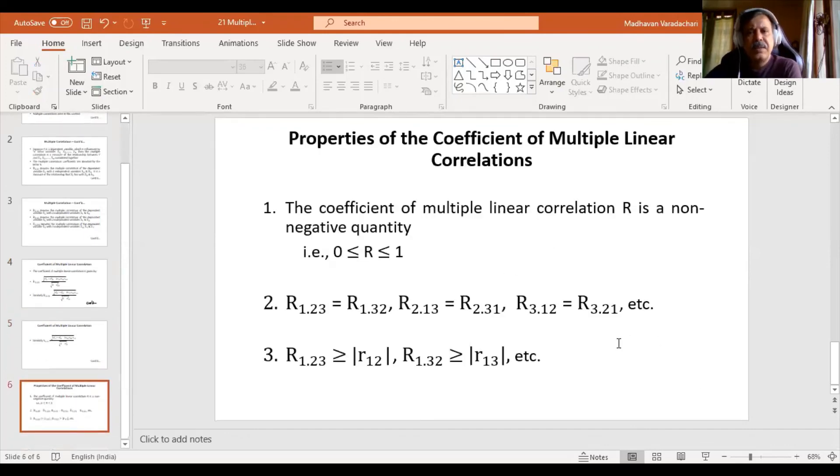So the properties of this multiple linear correlation are: it should lie between 0 and 1. And then R1.23 will be the same as R1.32. R2.13 will be the same as R2.31, R3.12 will be the same as R3.21, etc.